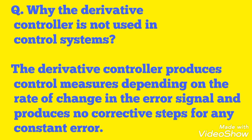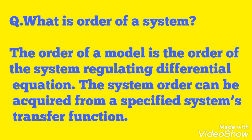Why is the derivative controller not used alone in a control system? The derivative controller produces control measures depending on the rate of change in the error signal and produces no corrective signal for any constant error. What is the order of a system? The order of a system is the order of the regulating differential equation; the system order can be acquired from the system's transfer function.